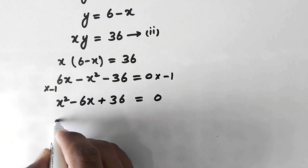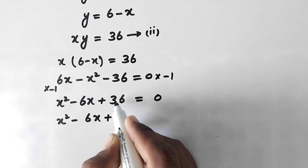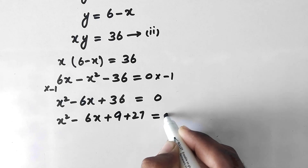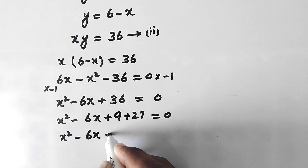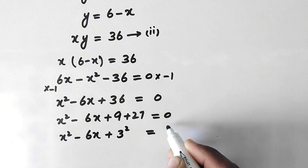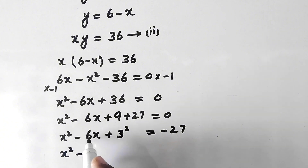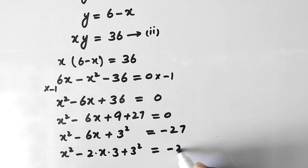In the next step we rewrite x squared minus 6x plus 36 by expanding 36 as 9 plus 27. The 9 is the square of 3. We take the 27 to the right hand side, so we have x squared minus 6x plus 9 equal to negative 27. The left side can be written as x squared minus 2 times x times 3 plus 3 squared equal to negative 27.